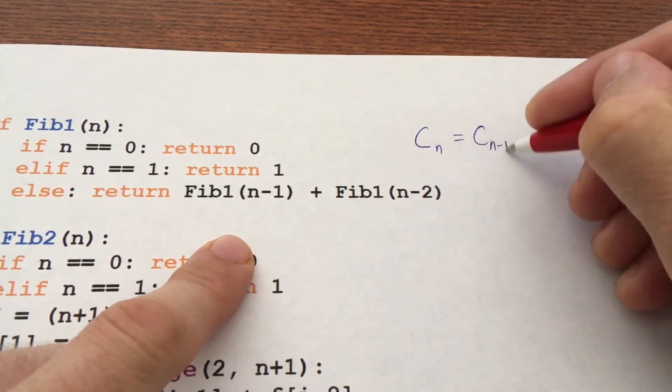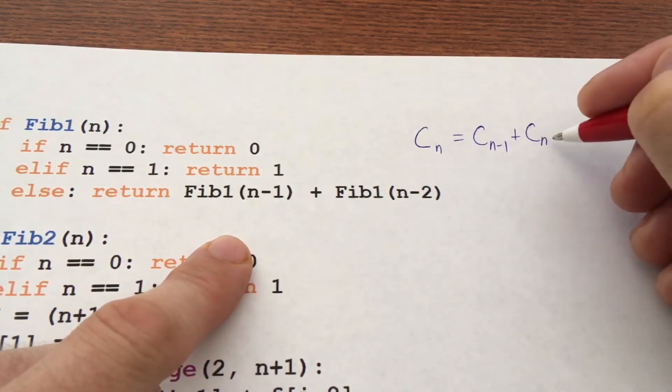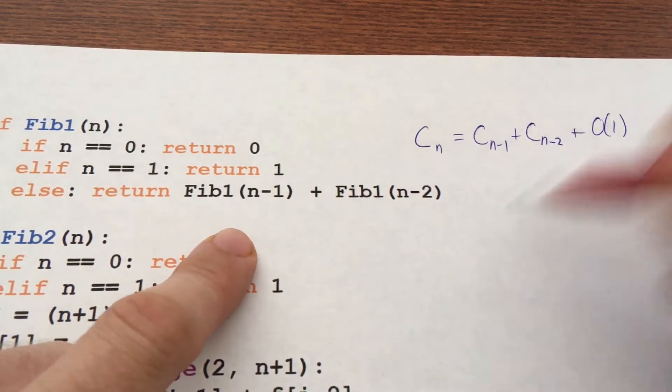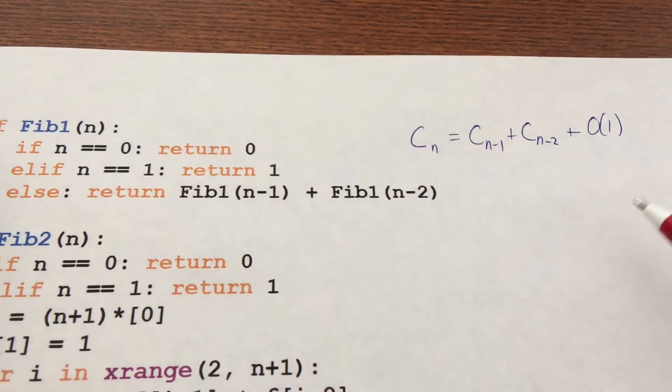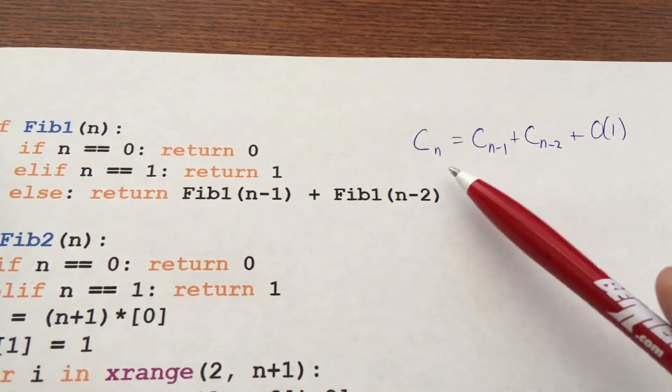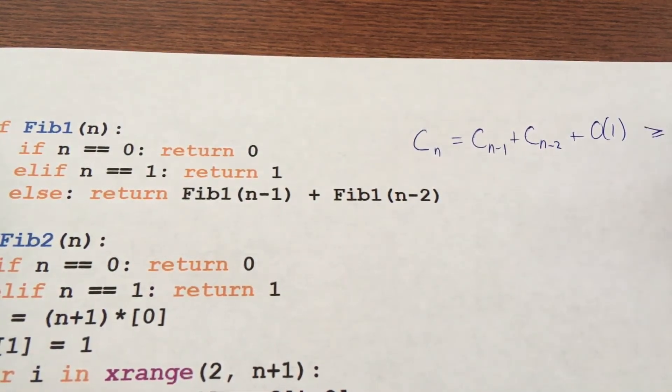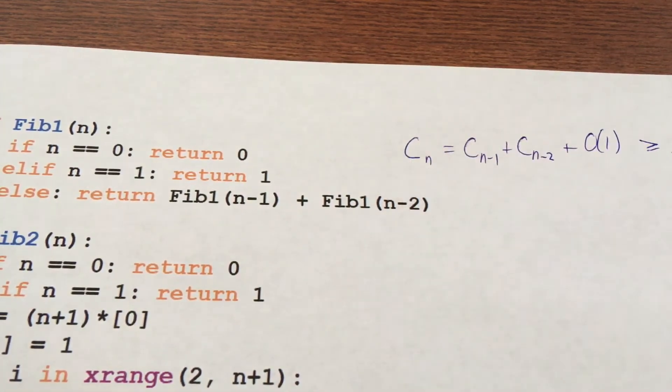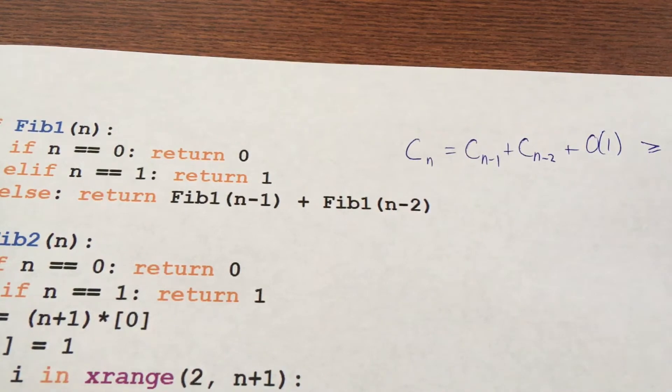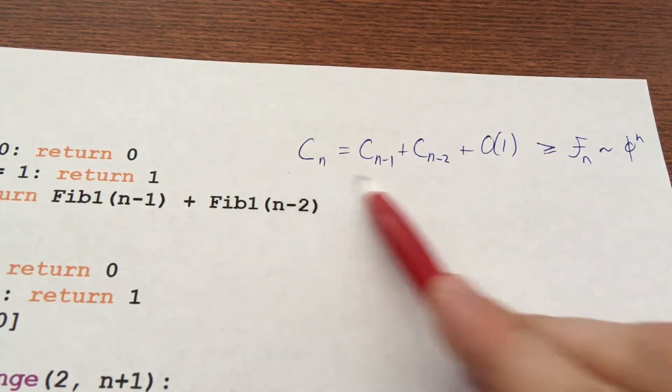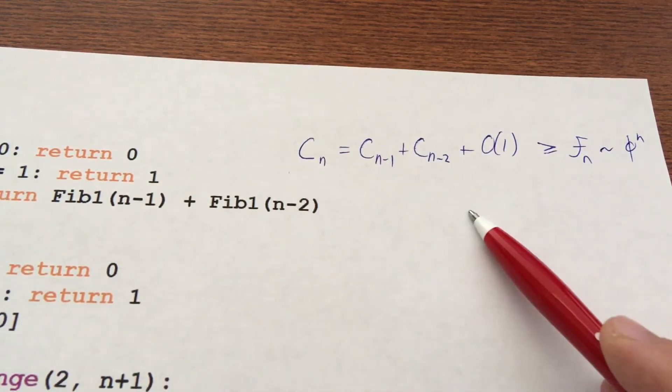It's doing some constant amount of work, then it's making these two recursive calls. So if we let C be the computational cost of this thing, we can hear the fan of the computer turn on. The computational cost at level n is equal to two recursive calls plus some sort of constant work. So this is the cost to compute the nth term. Notice that this is greater than or equal to F sub n. So this thing is exponentially hard. We know the nth Fibonacci number is approximately the golden ratio to the nth power, so this thing is exponentially difficult.